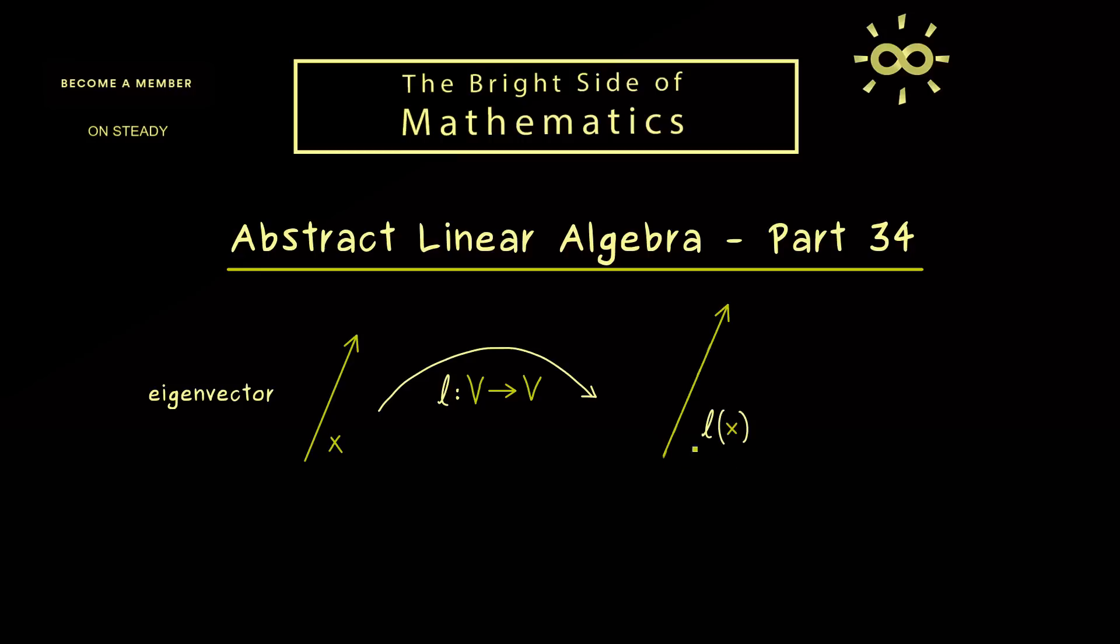Or more generally, we get a vector out that goes into the same direction as x. This means the image l(x) lies in the span of x.